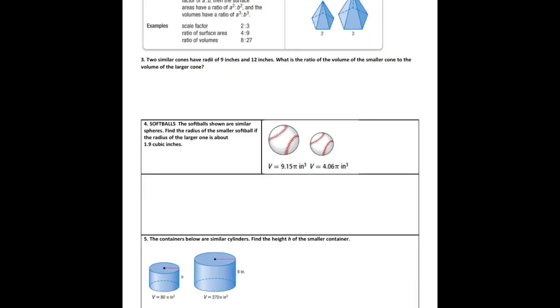So let's look at example number 3. Two similar cones have a radius of 9 and 12. So I'm going to draw those. I have two cones—one has a radius of 9 and one has a radius of 12. What is the ratio of the volume of the smaller cone to the large? So the A to B ratio, which is 9 to 12, can be reduced, divide by 3 to 3 over 4.